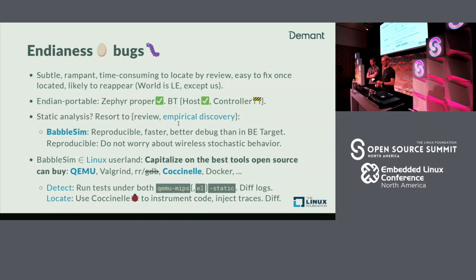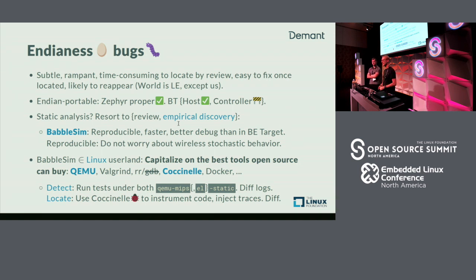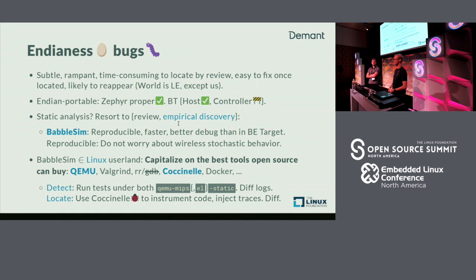We compile BabelSim and Zephyr for native POSIX for MIPS — both little-endian and big-endian — under the exact same software versions and run it twice. That gives us error logs, thanks to BabelSim, and then we diff those logs. That will basically branch out very early and tell us, yes, there is at least one endianness error, but not tell us where.